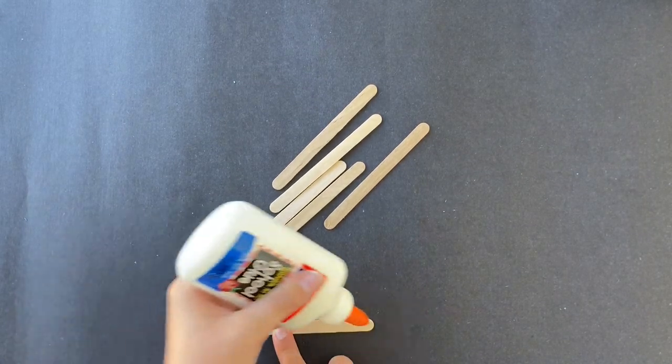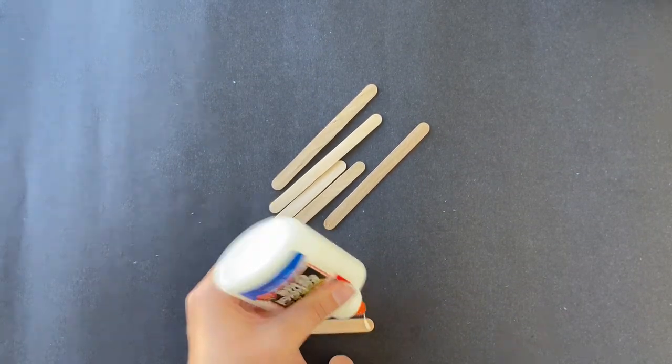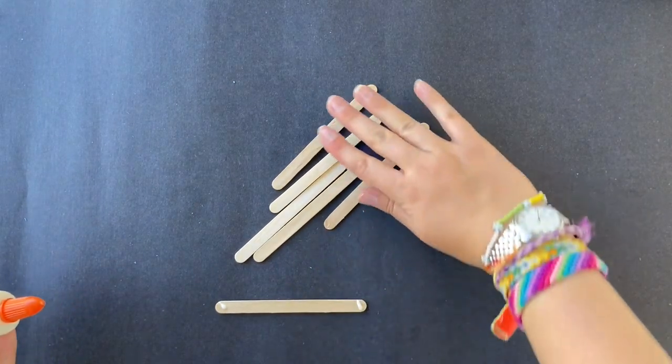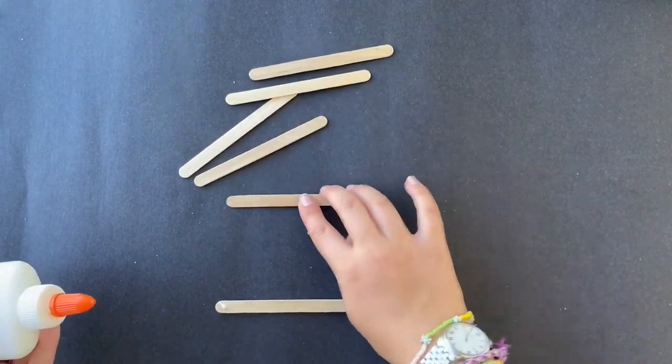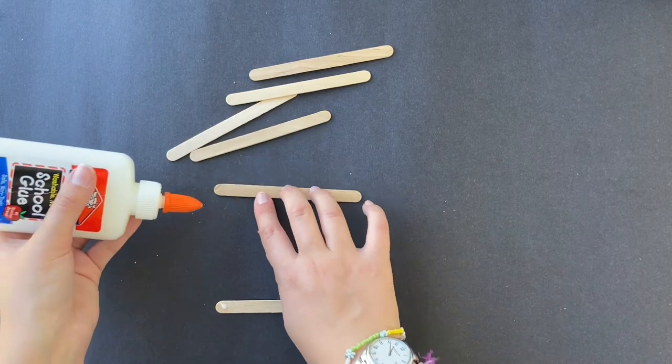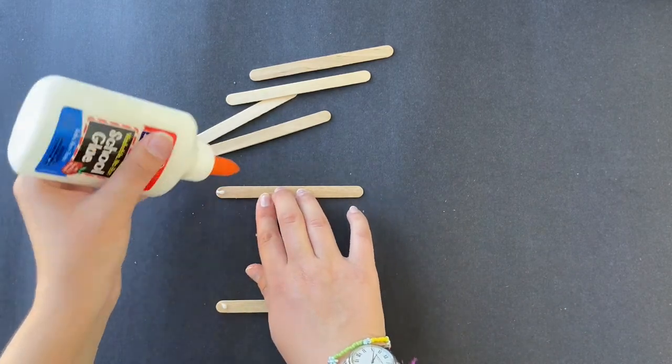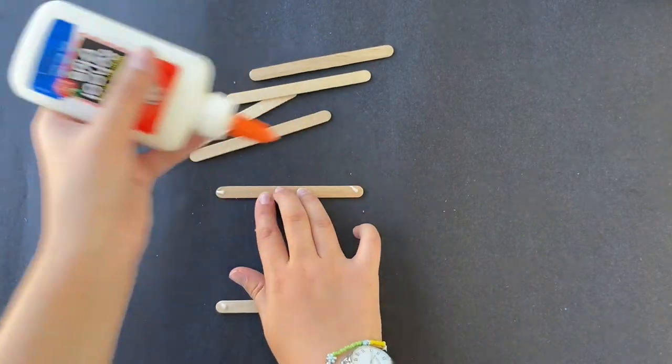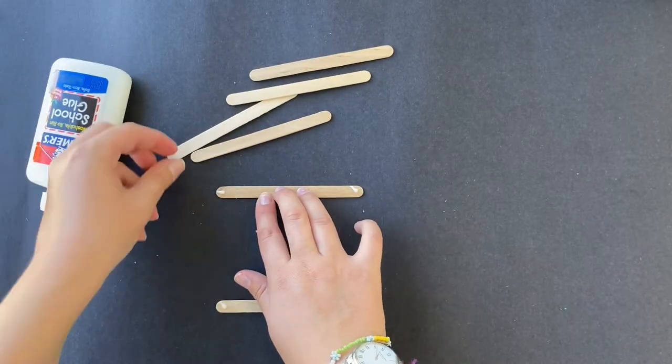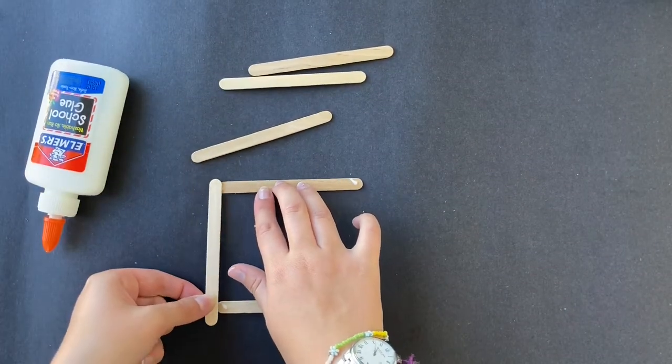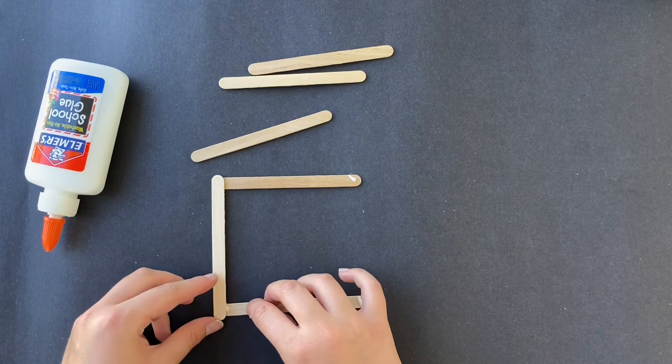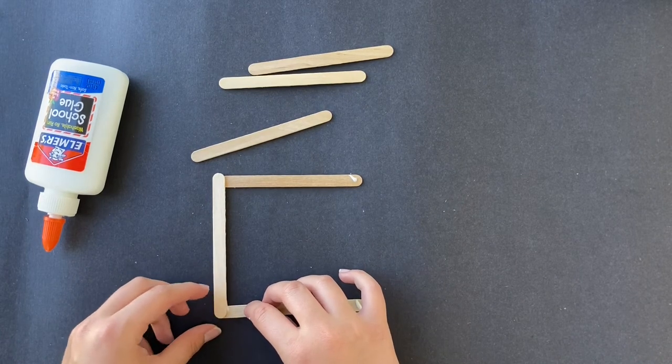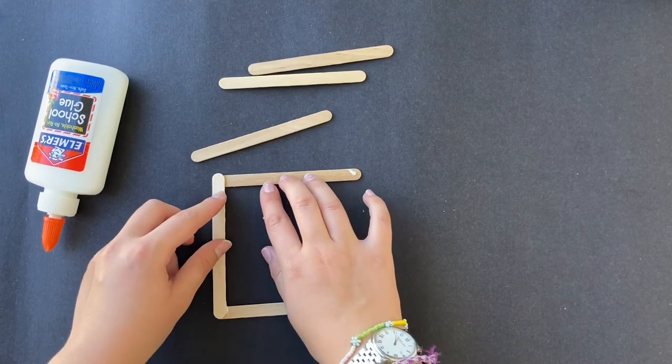I'm grabbing two of those sticks and I'm going to put a little dot of glue on either end. And here you see me doing that to the other stick. Now I'm putting a popsicle stick vertically to connect the two horizontal sticks.